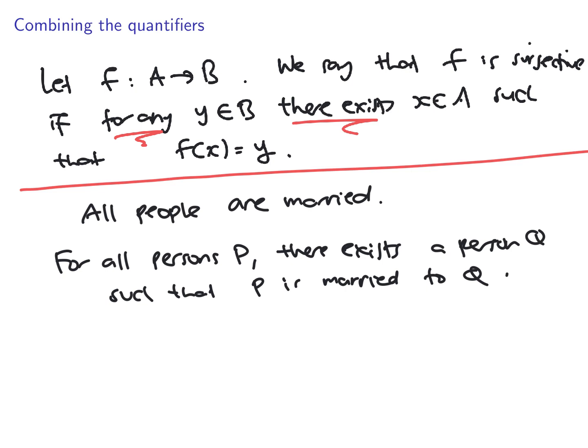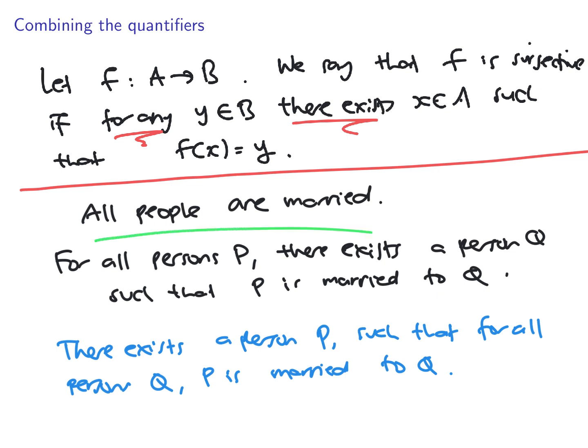Suppose now we're going to swap the quantifiers. Let's write the following: There exists a person P such that for all persons Q, P is married to Q. That statement says that everyone is married to P. Really not the meaning of the original sentence that we write. So, don't swap quantifiers. Please be careful with this.